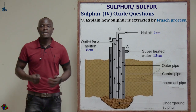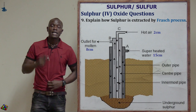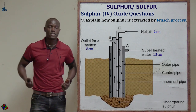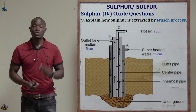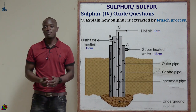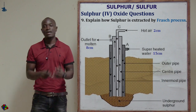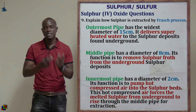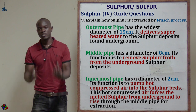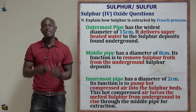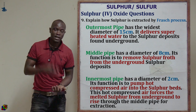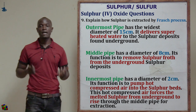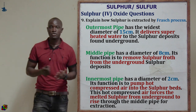Question nine asks: explain how sulfur is extracted using the Frasch process. There are three different pipes: the outermost pipe carries superheated water at 170°C and 10 atmospheres; the innermost pipe carries hot air at 15 atmospheres; and the middle pipe extracts sulfur from underground up to the surface, where it is placed inside large tanks for storage.